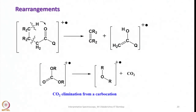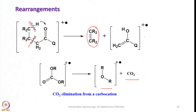For example, taking a species where cleavage can happen at two positions: the elimination of ethylene can occur and a cationic radical is formed. This cationic radical can further give an ether radical and CO2. So CO2 elimination from a carbocation can also happen during the rearrangement process.